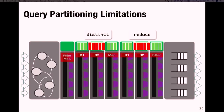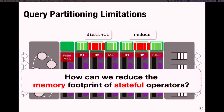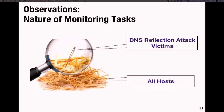We started exploring whether there was any way to reduce the memory footprint of these stateful operators. One key observation was the nature of monitoring tasks: for example, the number of hosts that will be victims of a DNS reflection attack is a very small fraction of total hosts in the network — in a way, we were trying to find needles in a haystack. We noted this observation holds true for most network monitoring tasks we were looking at.